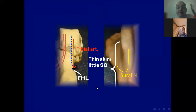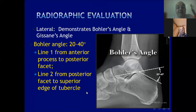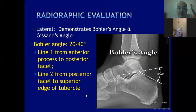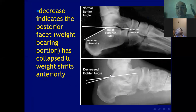In the radiological evaluation, on the lateral view, the Böhler angle is formed between two lines: the first from the peak of the anterior process to the highest point on the posterior facet, and the second from that point to the superior edge of the tuberosity. The normal angle is about 20 to 40 degrees. A decreased angle indicates collapse of the posterior facet, as in intra-articular fractures, and leads to anterior weight shift and decrease of the tibiotalar angle.